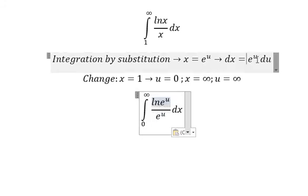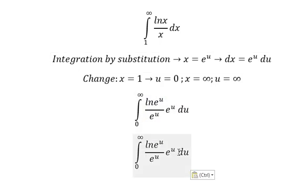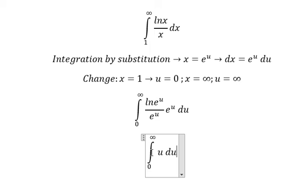dx we change for e to the power of u times e to the power of u, that will simplify. ln of e to the power of u equals u, and we get u squared over 2, and we have the boundary in here.